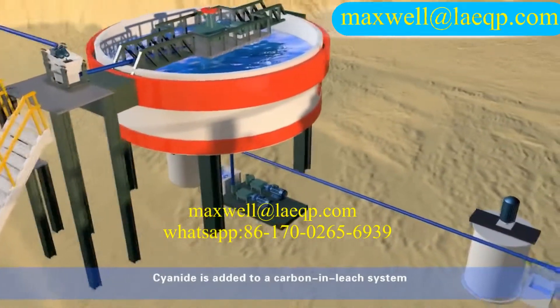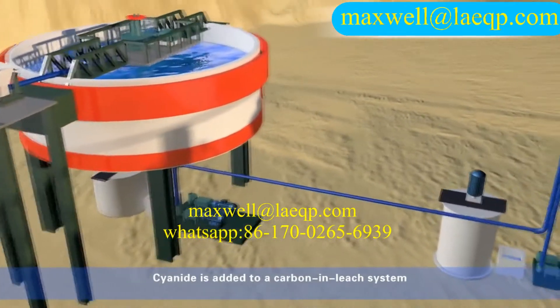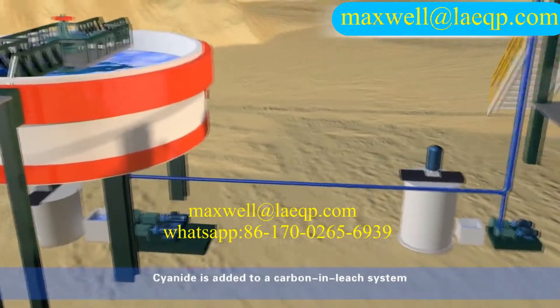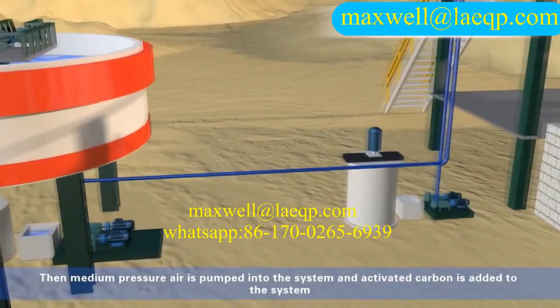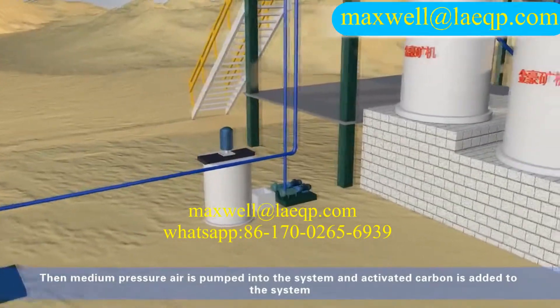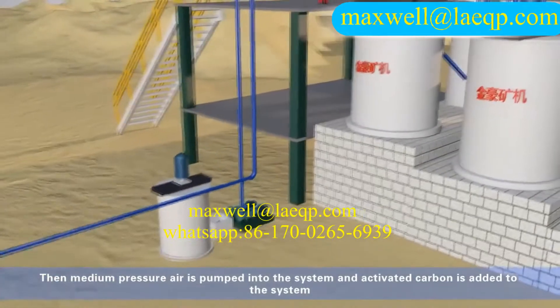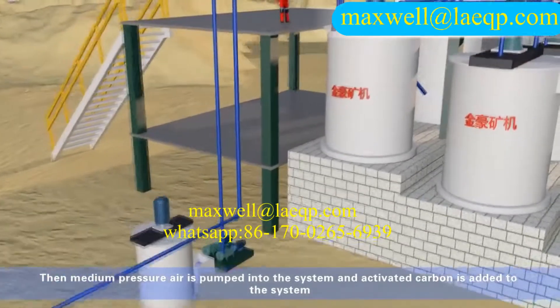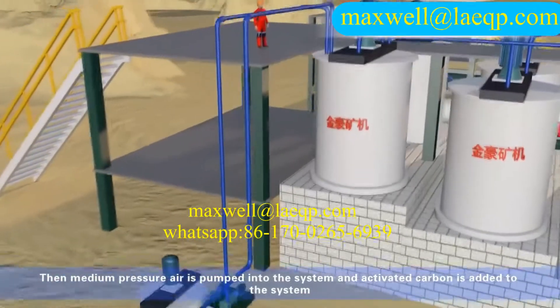Cyanide is added to the carbon in-leach system. Medium pressure air is then pumped into the system, and activated carbon is added to the system.